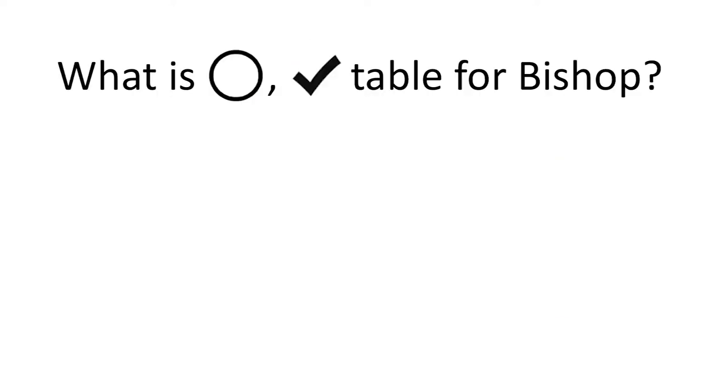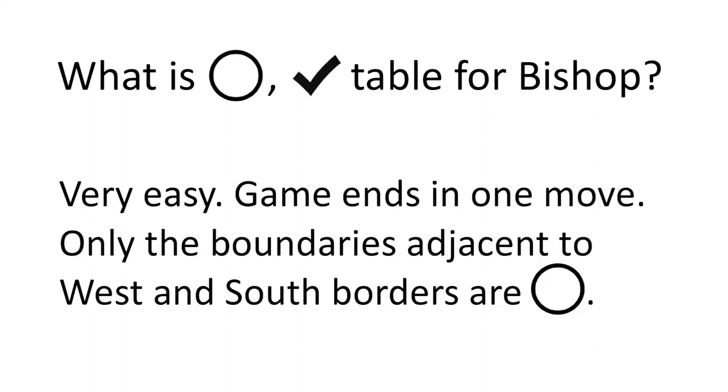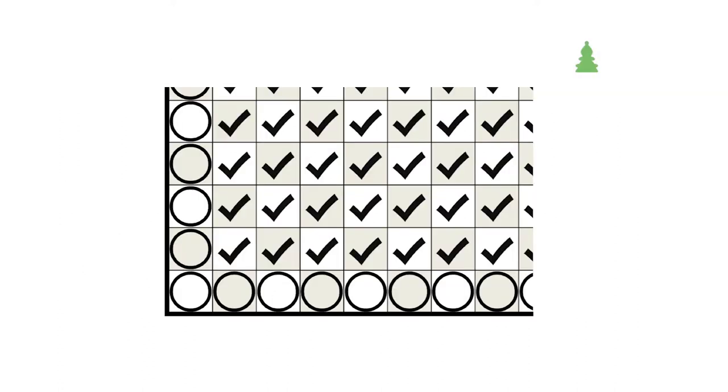Suppose the game of impartial bishop is played alone, then which locations are circles from which the previous player has won, and which are the checkmarks from which the next player can win? The answer is very easy. The game ends in one move. Only the boundary locations adjacent to the west and south borders are circles.